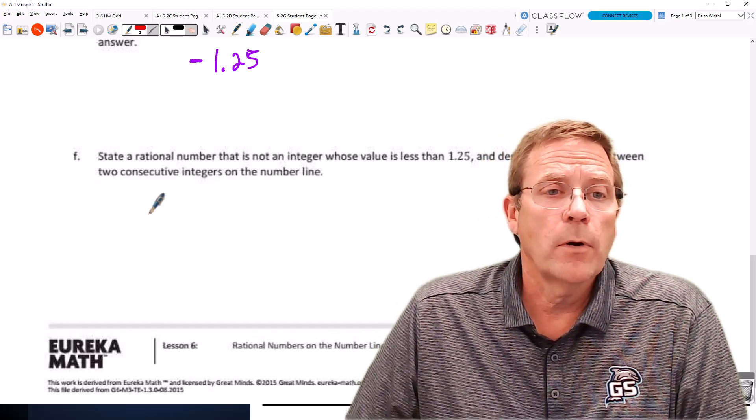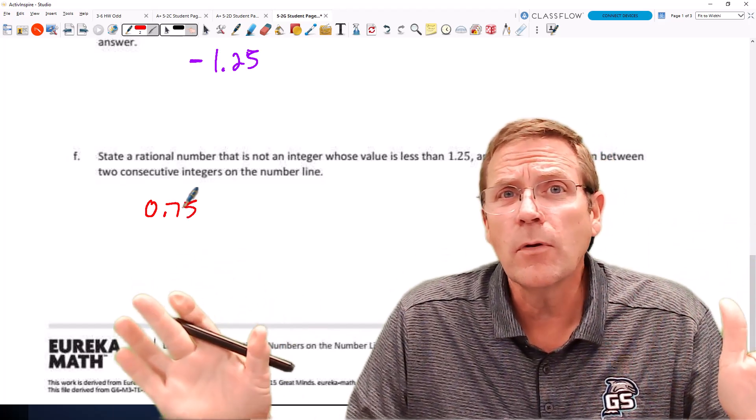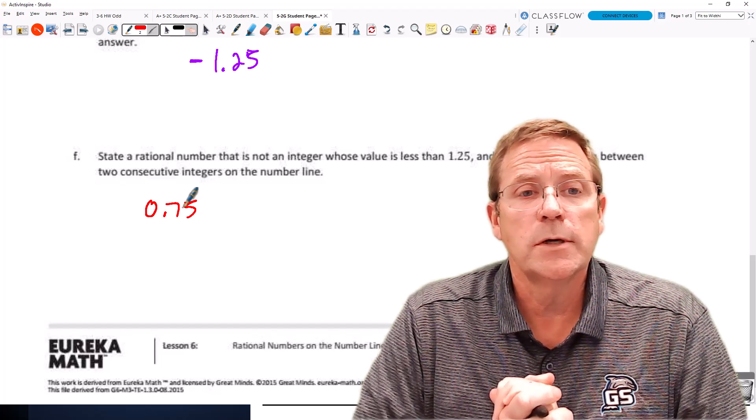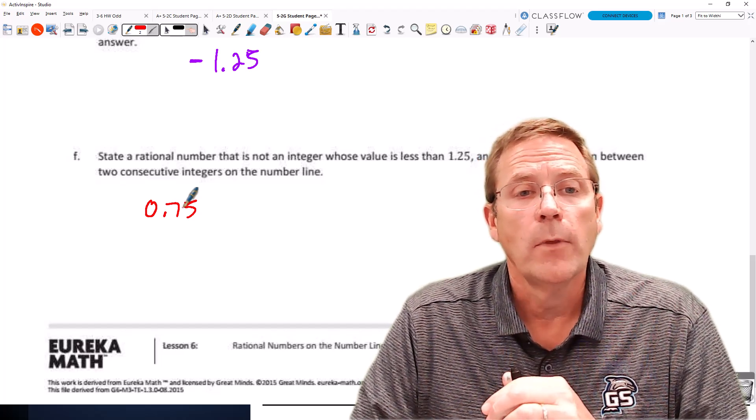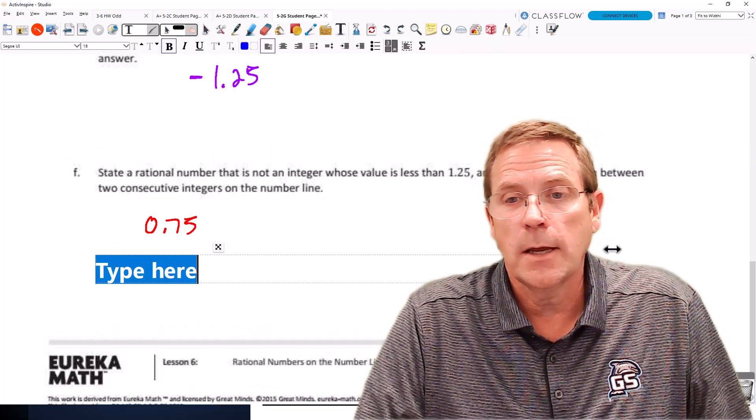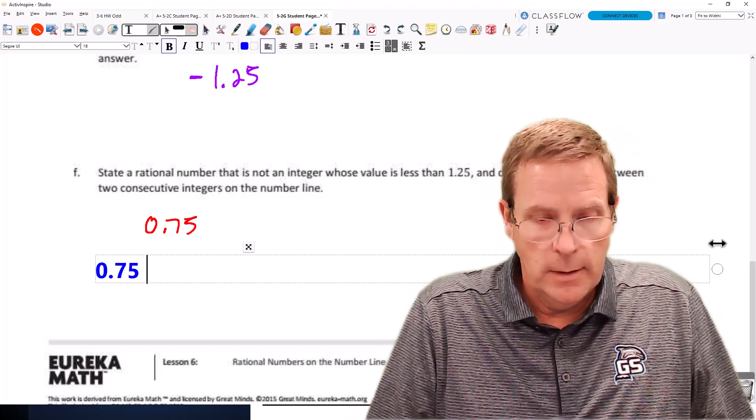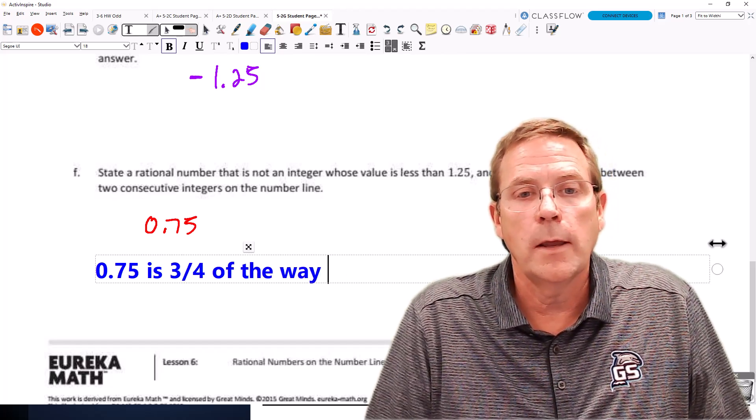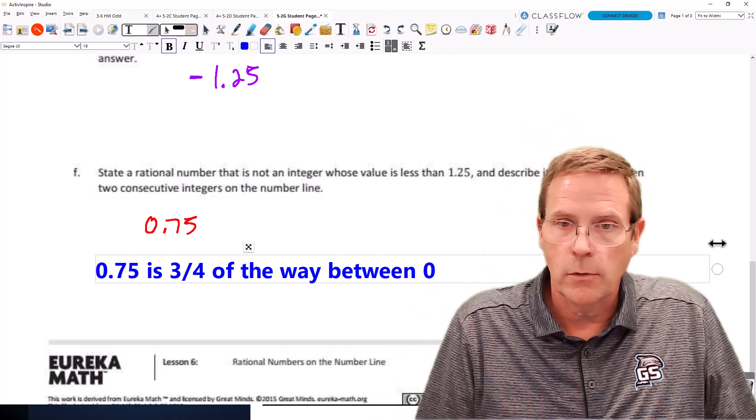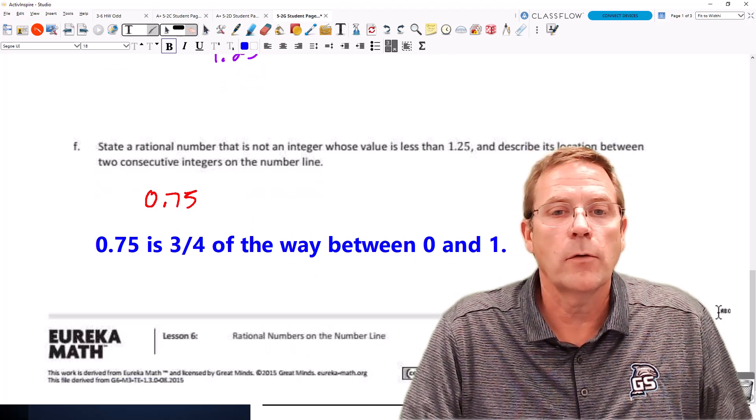So I'm going to pick the number of, let's say, 0.75. Could be any number less than 1.25. And then we're going to describe its relation between two consecutive numbers on the number line. My description is going to say that 0.75 is 3/4 of the way between 0 and 1.